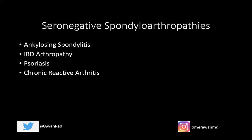Today we're talking about the seronegative spondyloarthropathies — a set of diseases where the patient is ANA negative and rheumatoid factor negative. They have a high association with the HLA-B27 allele. All four entities — ankylosing spondylitis, IBD arthropathy, psoriasis, and chronic reactive arthritis — tend to have a positive association with HLA-B27.